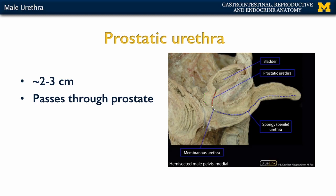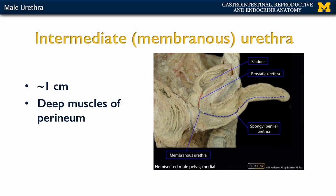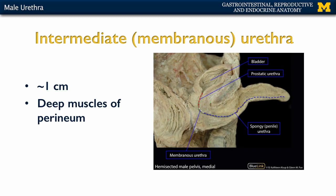This will lead into the intermediate, or middle, portion of the urethra, which is the smallest and shortest portion — only about one centimeter. This is sometimes referred to as the membranous urethra, because it's embedded within the deep muscles of the perineum. This is definitely the shortest of the portions of the urethra.